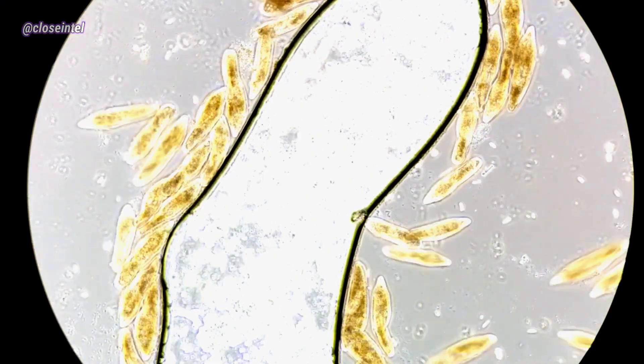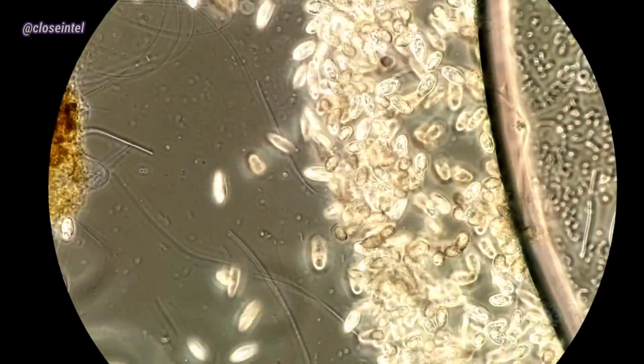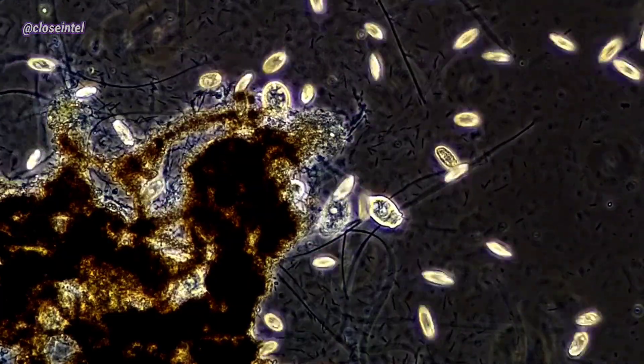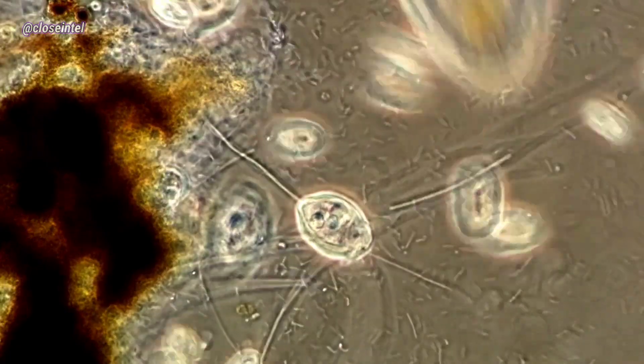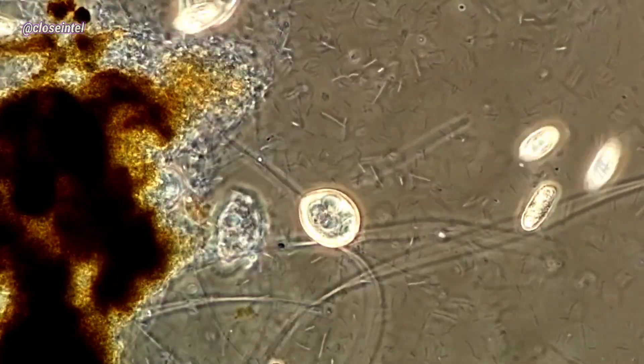As you can see here there's a ton of paramecium and there's also some other smaller cilia in the background. I'm not sure what these smaller cells are but there's tons of them. There's also some vorticella and tons of bacteria. The little tiny rod and spiral shapes that you see floating around the screen are actually the bacteria and there's a very high concentration of it in this sample.